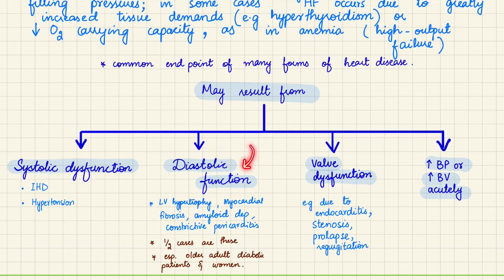Diastolic dysfunction can result from left ventricular hypertrophy, myocardial fibrosis due to any reason such as MI, amyloid deposition, and constrictive pericarditis — where the pericardium undergoes inflammation then fibrosis, causing the heart to not dilate properly in diastole.